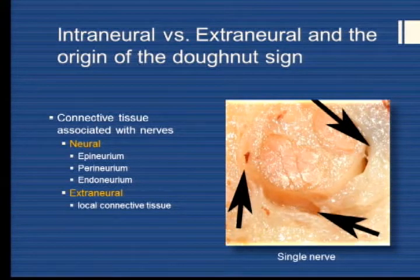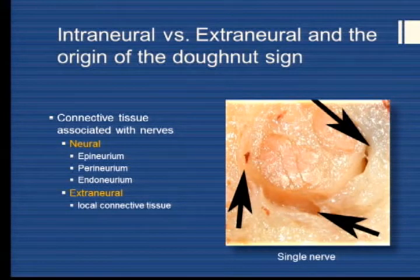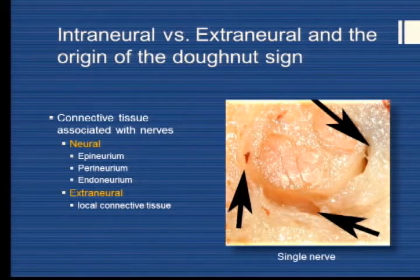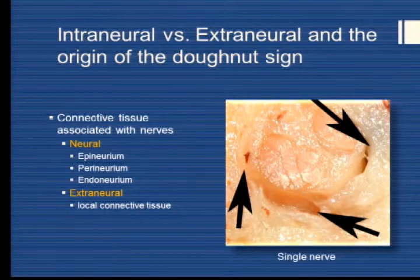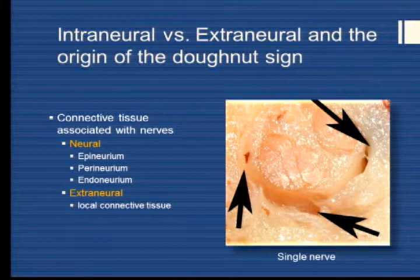When we see a true donut sign or perineural lagoon, what we're actually seeing is the expansion of a potential space delineated on the inside by the epineurium of the nerve and on the outside by the extra-neural connective tissue. And I think that's very important for what I would like to discuss next.